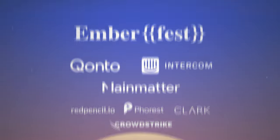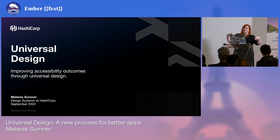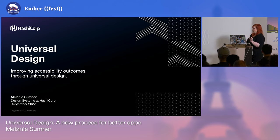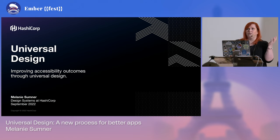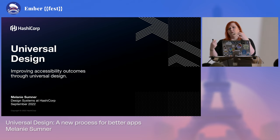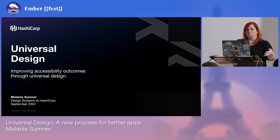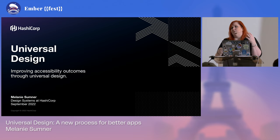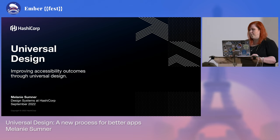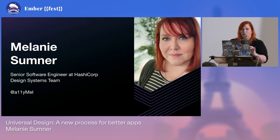I'm really excited about this talk because it's a new one — and it's kind of not evolution, because you're not supposed to say that, but about things that are not actually evolution. This is an outcome of last year's talk. I talked about reach and how to reach more people by making your apps more accessible, by making them work for more people on more devices in more contexts. We're at universal design now. If you don't know me, I'm Melanie Sumner, senior software engineer at HashiCorp.